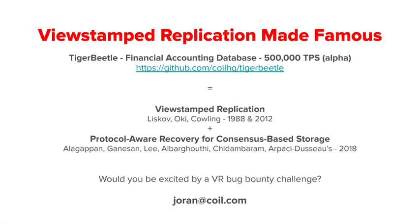Our third insight is that apart from redundancy, followers have one purpose: to accept new entries from the leader as fast as possible. However, in the VR paper, if a follower sees a newer entry than they were expecting, they must first do a state transfer to catch up, adding latency in the critical path. Our solution is for each entry to include a back pointer to the previous entry's checksum. This creates a blockchain and allows followers to accept new entries instantly and backfill their log in the background. This also reduces the do-view-change message to a single network packet.